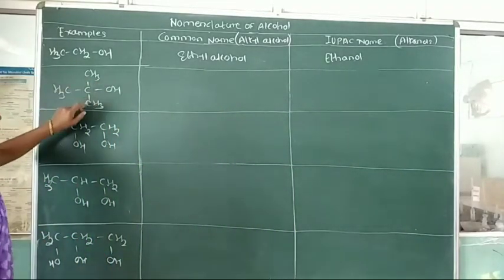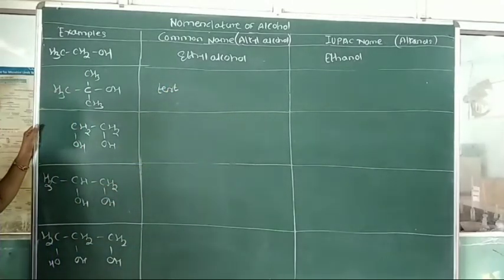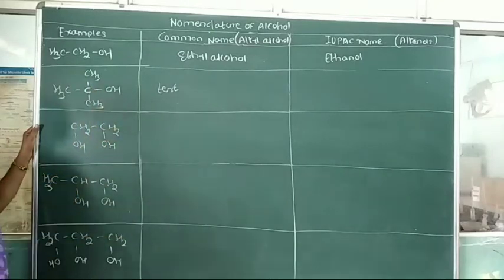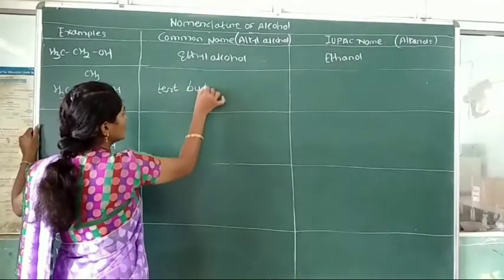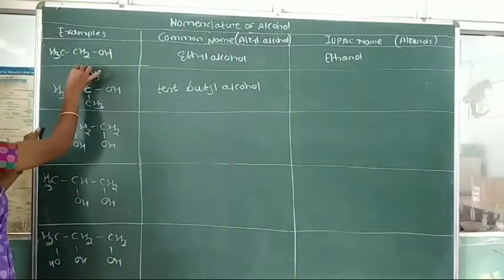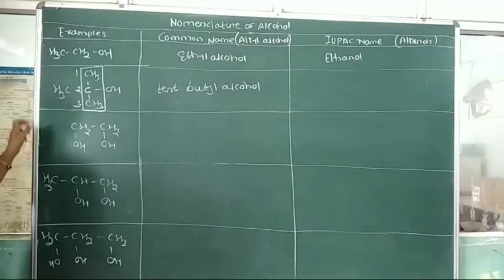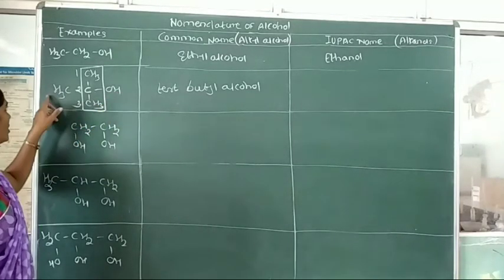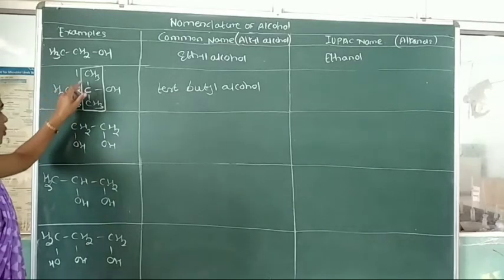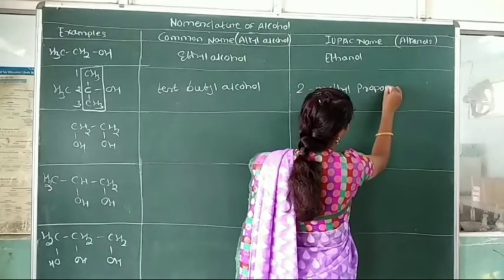Second example: CH3C(CH3)2OH. Here the hydroxy group is attached to a tertiary carbon atom. In the common system, we use the prefix 'tertiary'. With 4 carbon atoms, the compound is tertiary butyl alcohol. In the IUPAC system, select the longest continuous chain with 3 carbon atoms. Both a methyl group and the hydroxy group are attached to the second carbon. The IUPAC name is 2-methylpropan-2-ol.